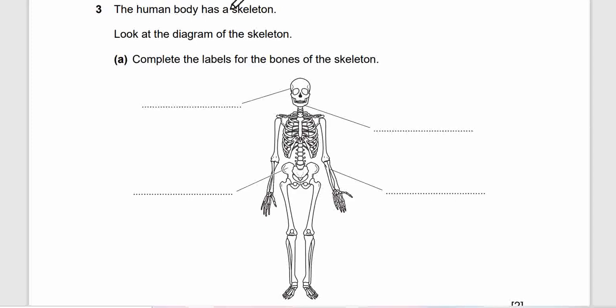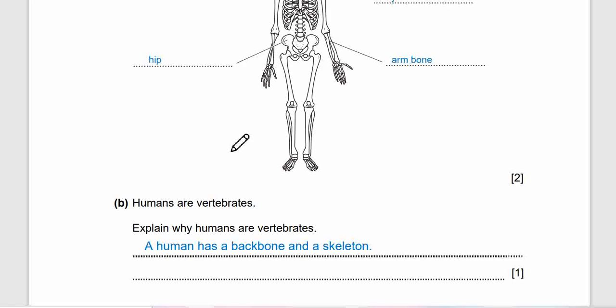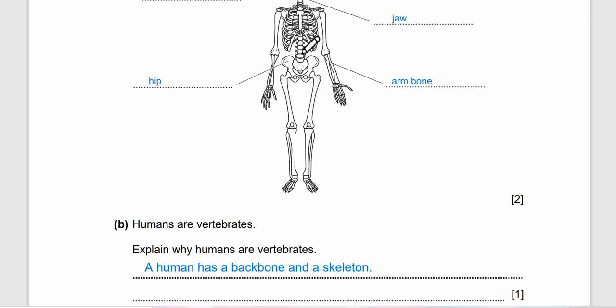Let's move on. Question 3. The human body has a skeleton. Look at the diagram of the skeleton here. Question A. Complete the labels for the bones of the skeleton. Fill the slots guys. And here's the answer. So this is skull, this is jaw, this is arm bone, and this is hip bone. Question 3B says, humans are vertebrates. Explain why humans are vertebrates. Well, a human has a backbone. This is the backbone. And this is all the skeleton.